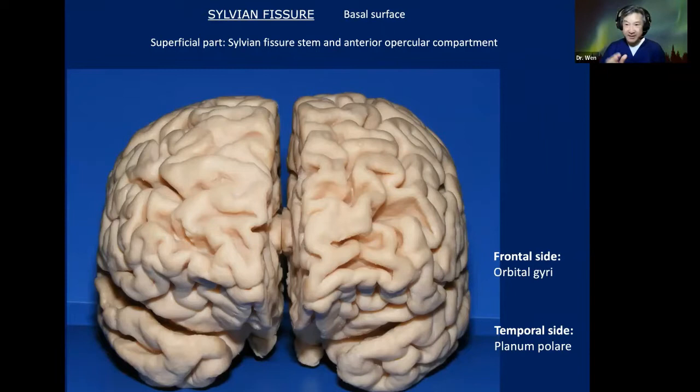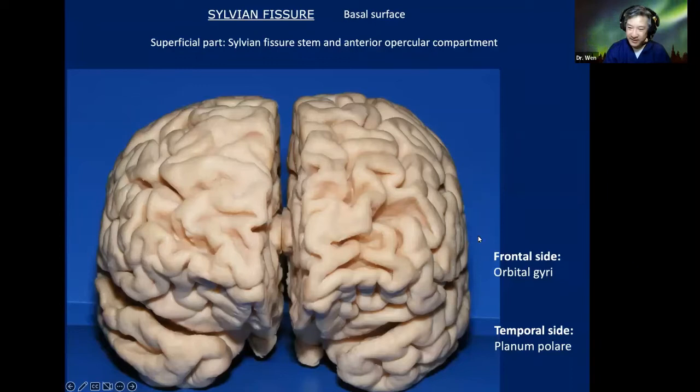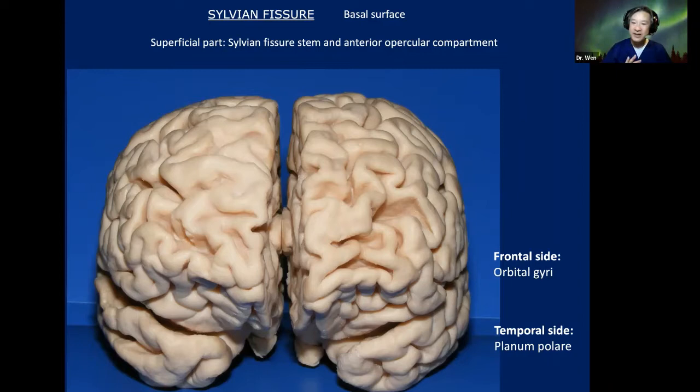Coming back to the Sylvian fissure — the Sylvian fissure occupies two surfaces of the brain. One part is on the basal surface, and another part is on the lateral surface. On both surfaces, the Sylvian fissure presents two parts: one on the surface, called the superficial part, and one called the deep part. Let's talk about the basal surface first.